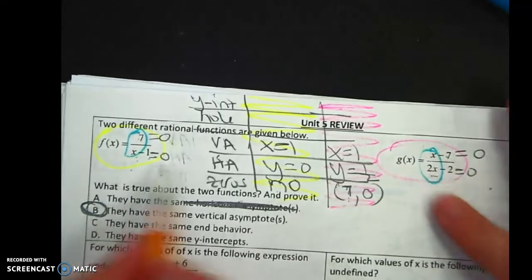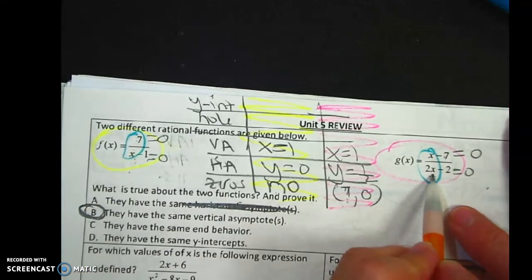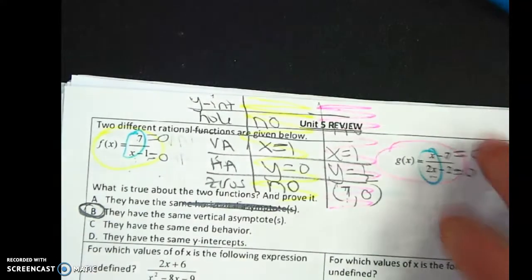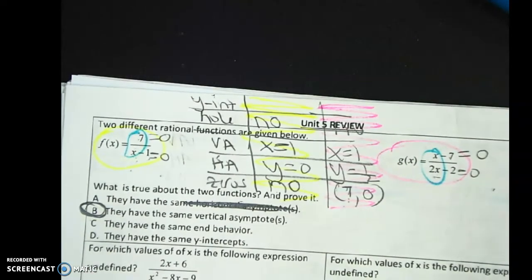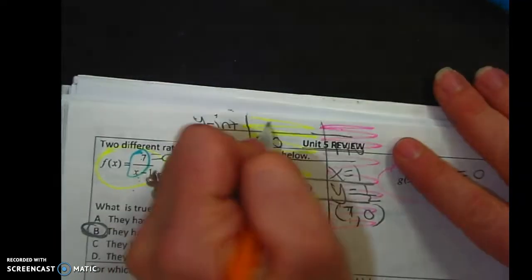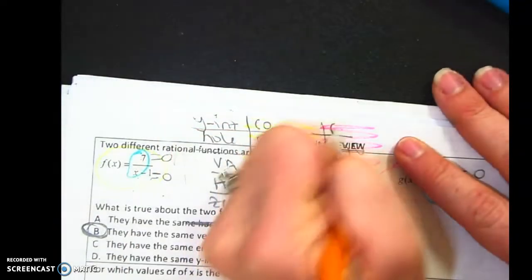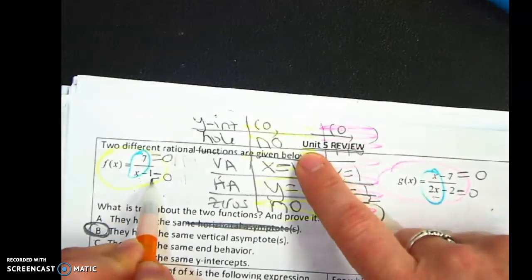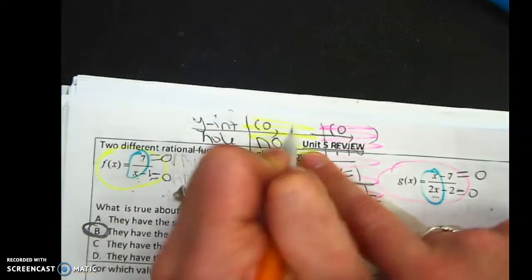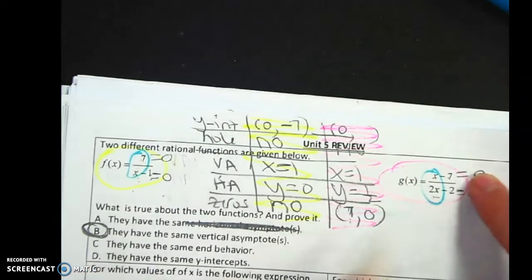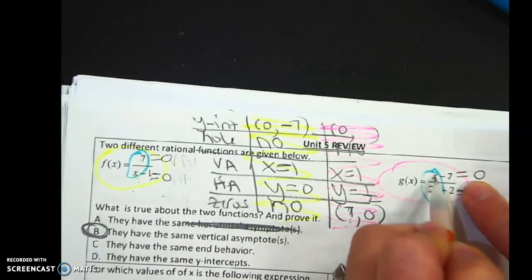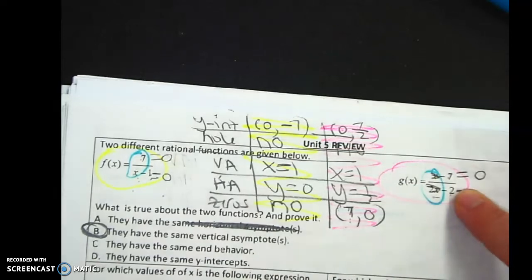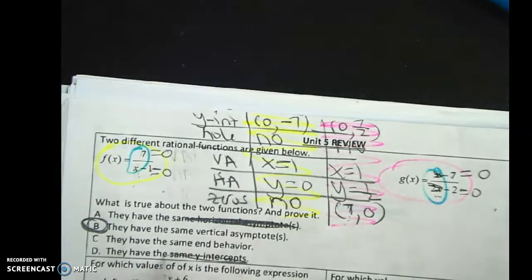Hole means that there are no repeats. There are no holes here, and there are no holes here. So if that was an option, they would have the same hole technically, because they both don't have one. To get the y-intercept, I plug in zero. If I plug in zero here, zero minus one is negative one, seven divided by negative one is negative seven. If I plug in zero here, that's positive seven halves, so they don't have the same y-intercepts.